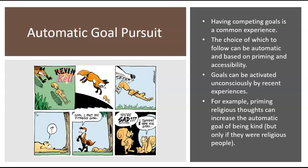Priming and accessibility can sometimes determine which goal we're going to pursue, depending on what's been primed or most recently accessed in memory. The example in the text is whether people become more likely to behave kindly if primed with thoughts connected to religious maxims like the golden rule. For people whose self-concept is connected to their religiosity, priming with religious thoughts can actually increase their level of kindness.